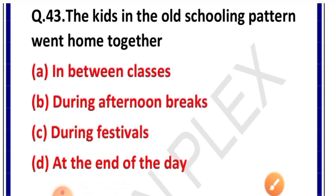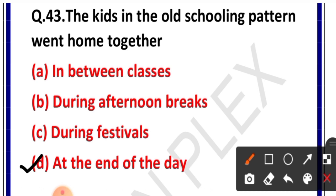Question number 43: The kids in the old schooling pattern went home together — when? Options: A. In between classes, B. During afternoon breaks, C. During festivals, D. At the end of the day. Correct answer is option D — at the end of the day. Jab school ki chutti ho jaati thi, tab saare bachche saath-saath mojmasti karte hue ghar jaate the.